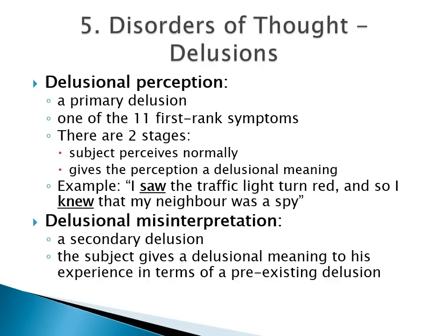A delusional perception differs from a delusional misinterpretation in that the delusional misinterpretation is a secondary delusion — the subject gives a delusional meaning to experiences in terms of a pre-existing delusion. So if a patient already believes their neighbour is a spy and then sees the traffic light turn red and gives it a delusional interpretation to support that belief, it is a delusional misinterpretation. But if for the first time, after seeing the traffic light turn red, they start believing the neighbour is a spy, then it is a delusional perception.